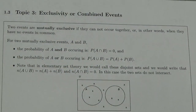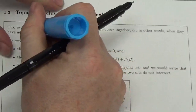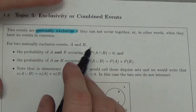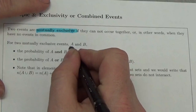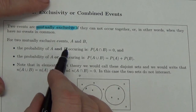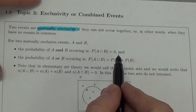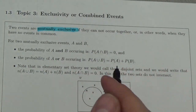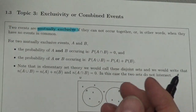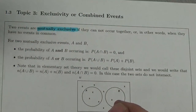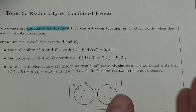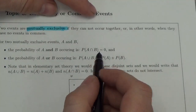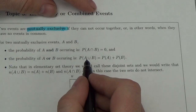Mutually exclusive events are events that cannot occur together — there is no overlap in the events at all. So for two mutually exclusive events A and B, the probability of A and B occurring is zero. For example, if you've got marbles in a bag with red marbles and green marbles, the probability of grabbing a marble that is both red and green is zero — there are no such marbles.